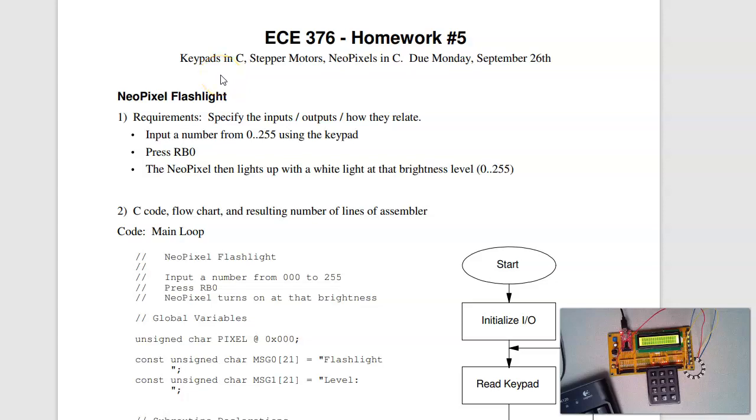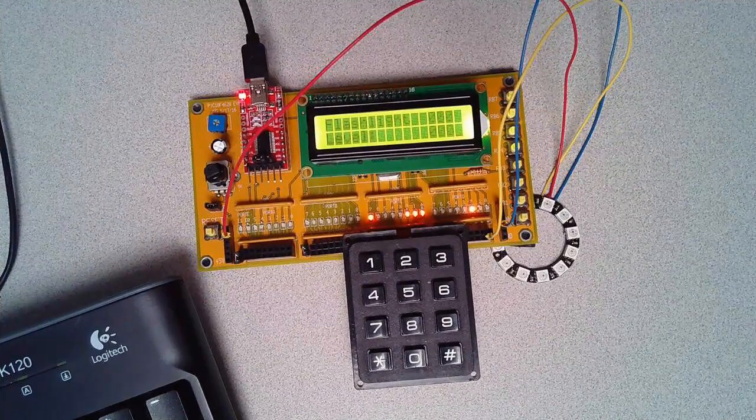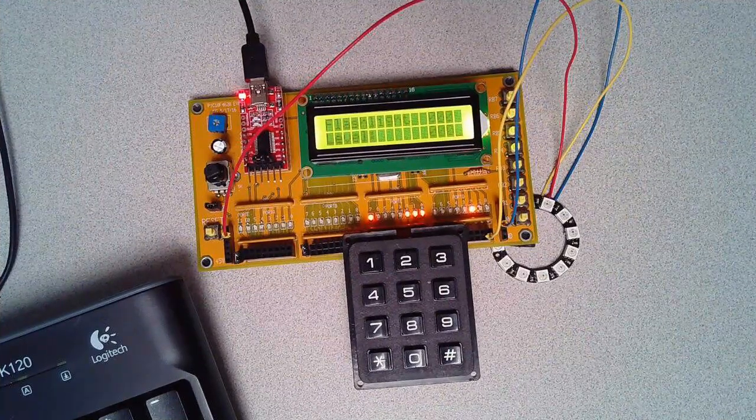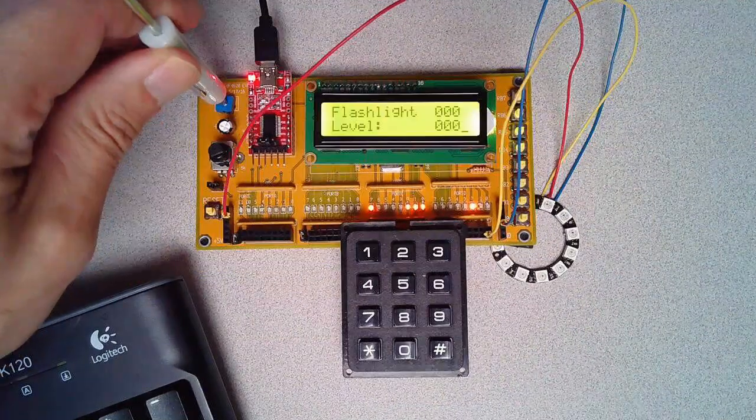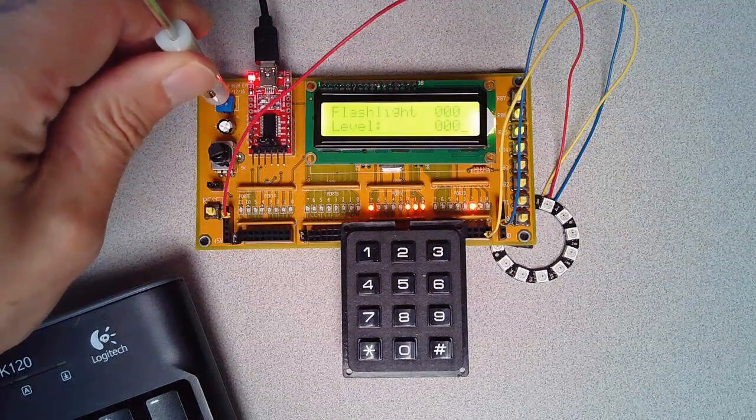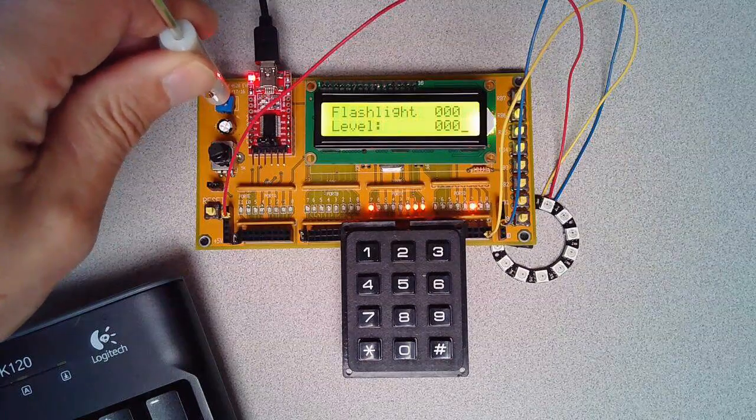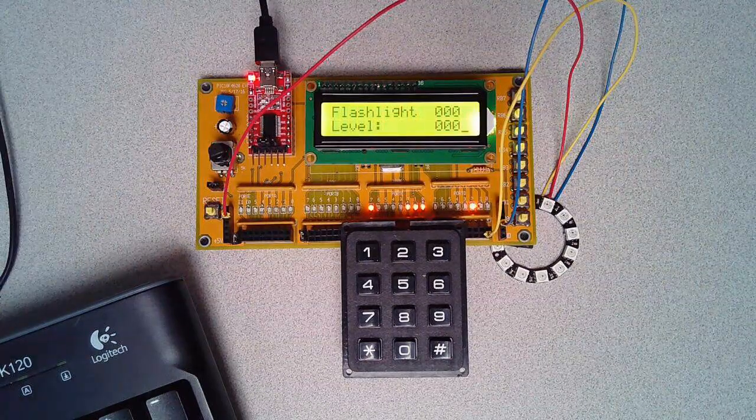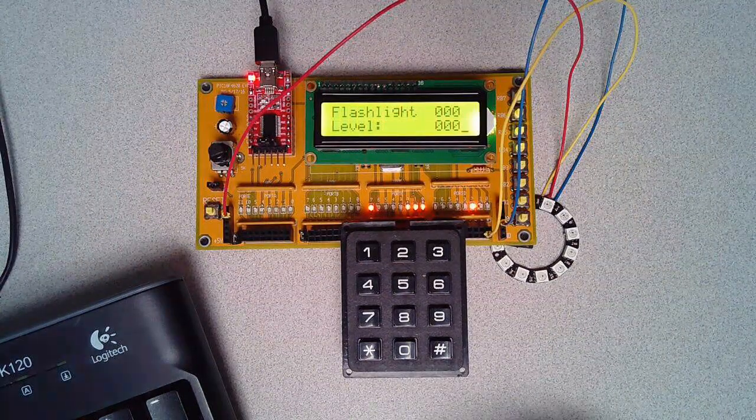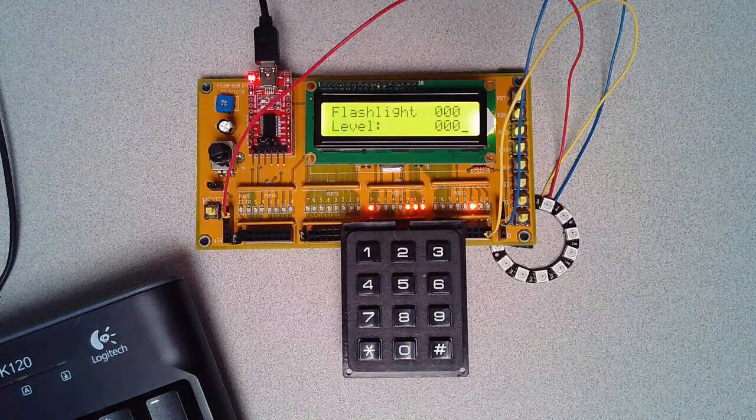Here are our solutions to homework set number 5 for ECE376. The first problem is trying to build a NeoPixel flashlight. Now on your LCD display, you can adjust the contrast with this little knob right here. The goal of this project is to come up with a NeoPixel flashlight, kind of your choice on the requirements.